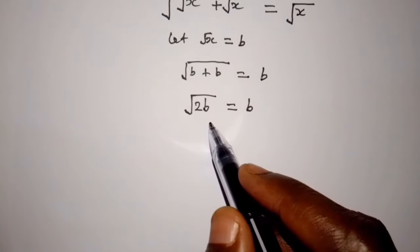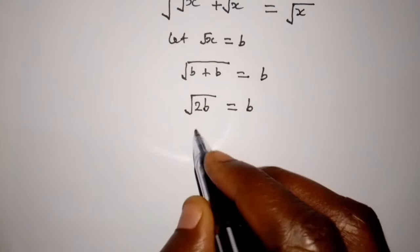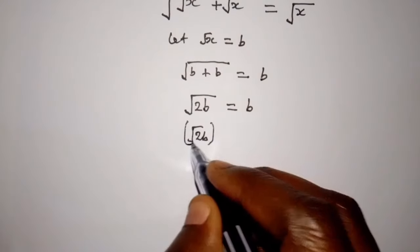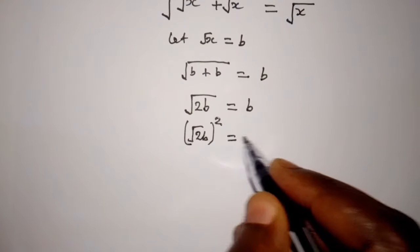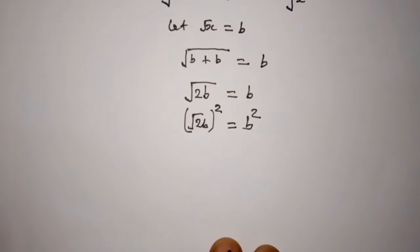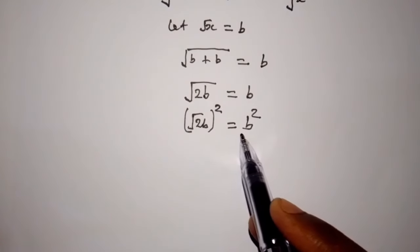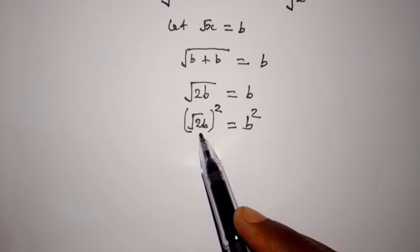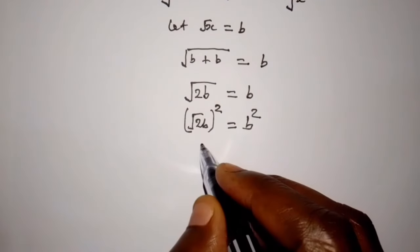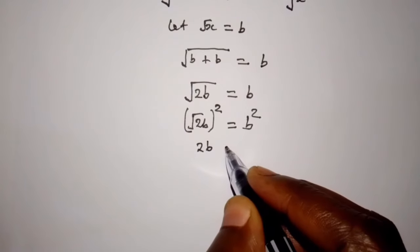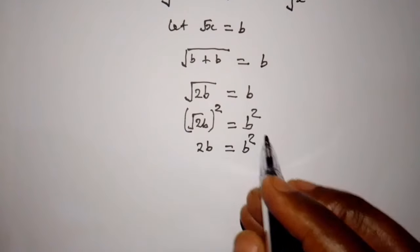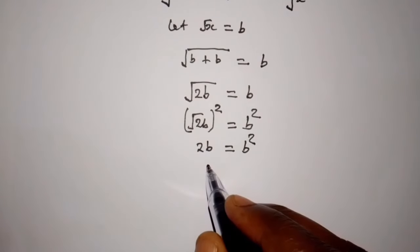We can square both sides. Square root of 2b squared is equal to b squared. Square root of 2b times square root of 2b gives us 2b, so 2b is equal to b squared.